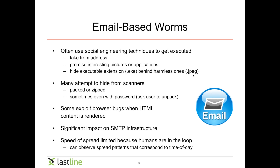Some worms exploit browser bugs when HTML content is rendered. Lately browsers are better and have more defense techniques, so people have been targeting plugins such as Java or Acrobat PDF. In any case, email worms and malware have a significant impact on the SMTP infrastructure because a lot of these attachments are sent automatically using email. One thing you would notice in your network is that suddenly the number of emails going out dramatically increases, causing quite a bit of impact on the SMTP infrastructure.